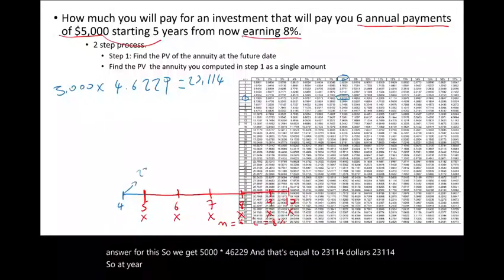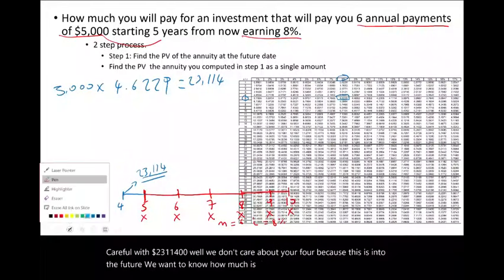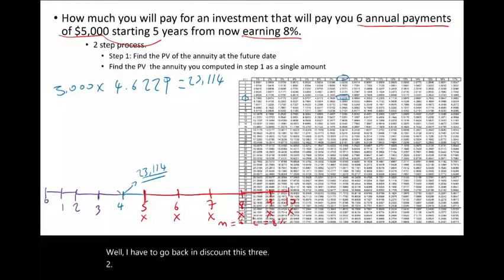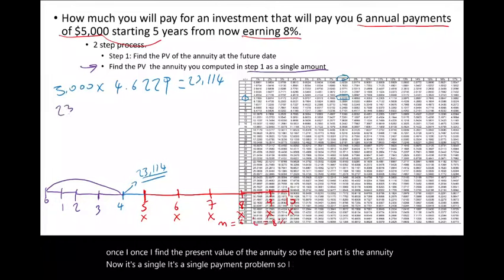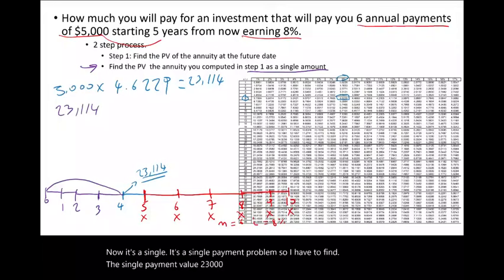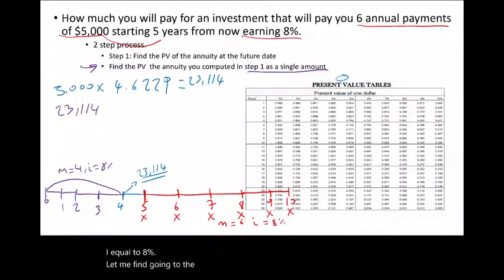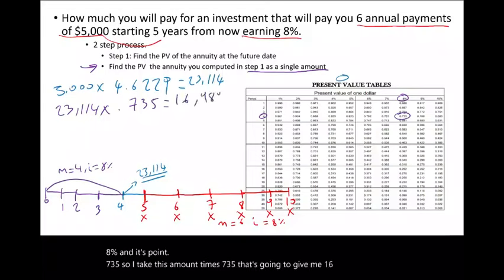We don't care about year 4 because this is into the future. We want to know the present value of this payment today. So I have to discount it back — years 3, 2, 1, 0 — as a single payment, because once we find the present value of the annuity, it becomes a single payment problem. With n equal to 4 and i equal to 8%, going to the present value of a single amount table, the factor is 0.735. Taking $23,114 times 0.735 gives us $16,989.15.